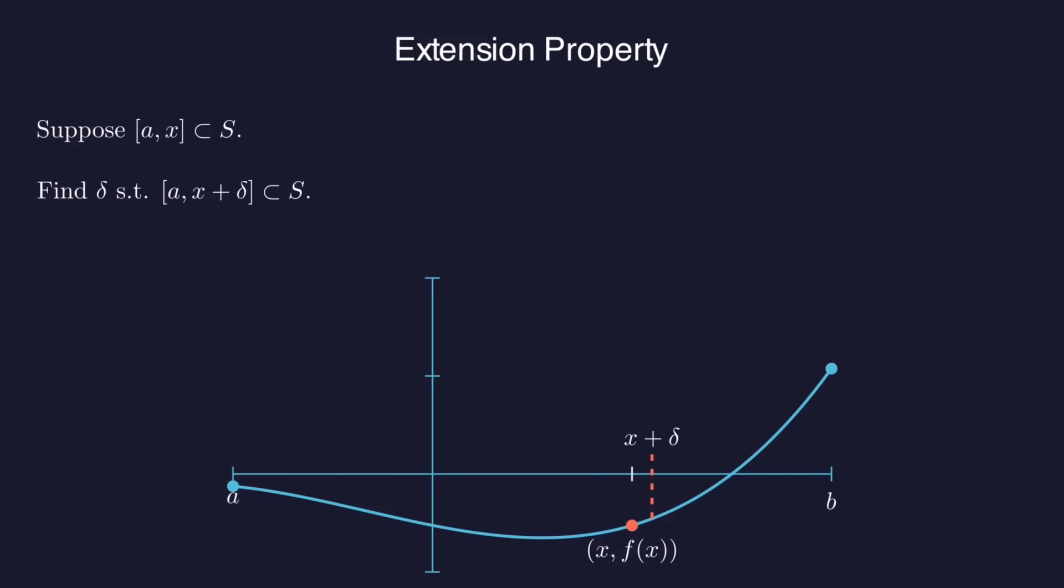Well, if f of x is negative, then we can use a continuity argument just like the earlier ones to find a small interval around x where the function is still negative. On the other hand, if f of x is not negative, then by the definition of s, there must be a root in the interval a to x.